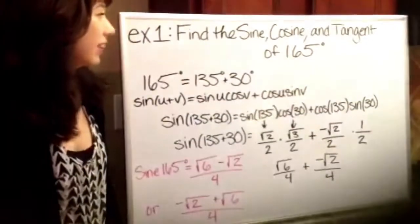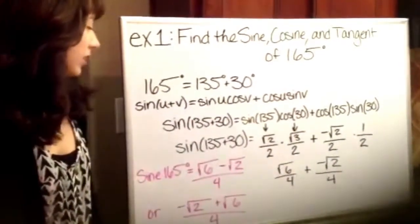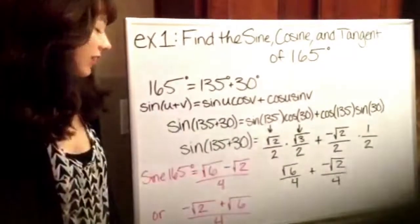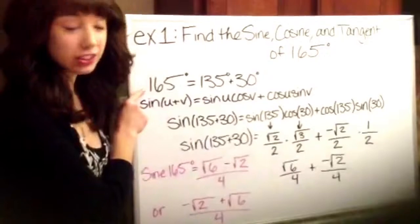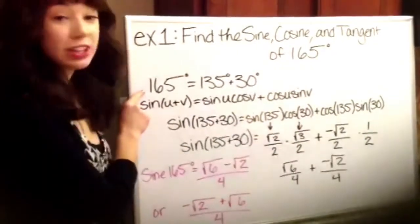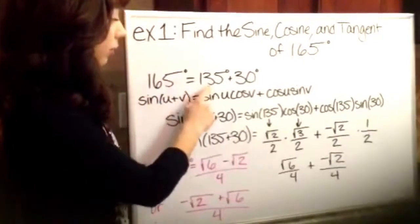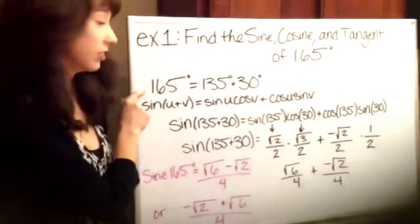For example 1 we have find the sine, cosine, and tangent of 165 degrees. So the first step is to find two degrees on the unit circle that equals 165 because 165 is not on the unit circle. So you could find two numbers that either add or subtract to get you 165. I chose 135 plus 30 degrees and that will get you this measurement that's not on the unit circle.